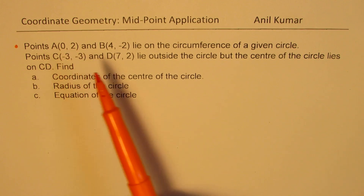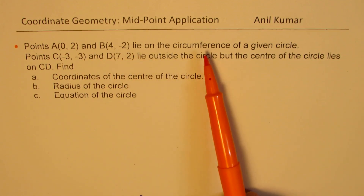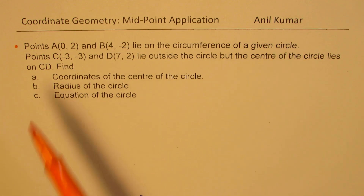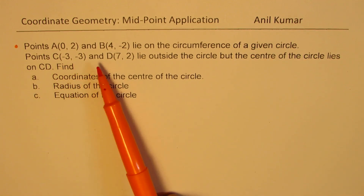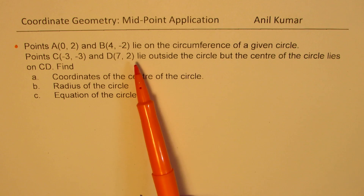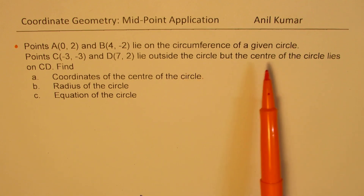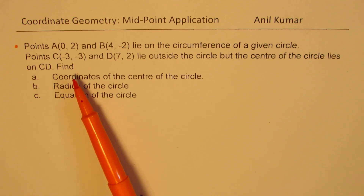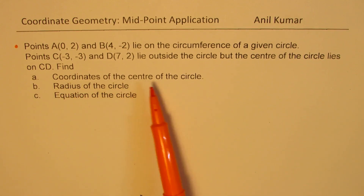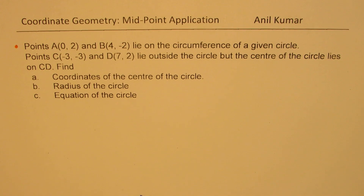Points A(0, 2) and B(4, -2) lie on the circumference of a given circle. Points C(-3, -3) and D(7, 2) lie outside the circle, but the center of the circle lies on CD. Find the coordinates of the center of the circle, the radius of the circle, and the equation of the circle.